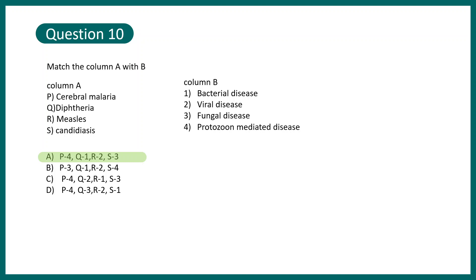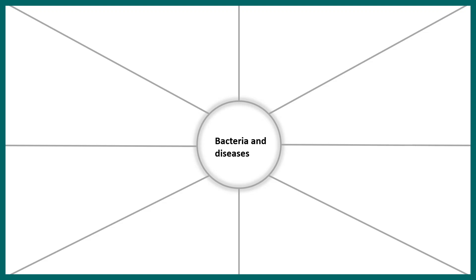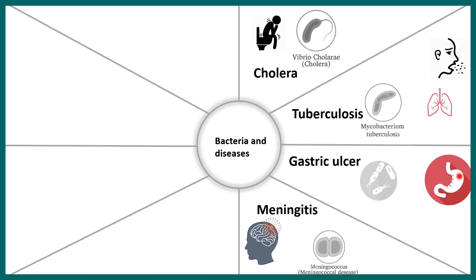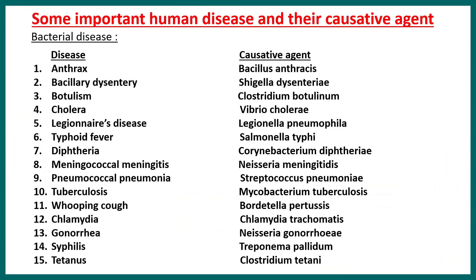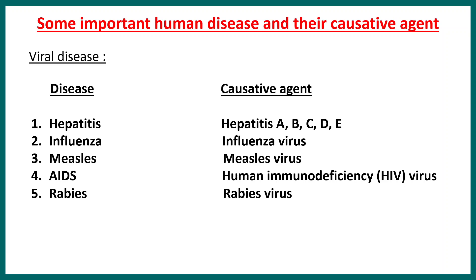Now you have an understanding of what type of questions might be asked. Focus on these particular bacterial diseases: cholera, tuberculosis, gastric ulcer, meningitis, leprosy, anthrax, and typhoid — because based on IIT JAM's previous year metrics, these diseases and their associated bacteria are frequently asked, especially anthrax, typhoid, and Mycobacterium. A list of important bacterial and viral diseases is provided here and can be downloaded from my Facebook page. If you like this video, give it a thumbs up, don't forget to like, share, and subscribe — thank you!